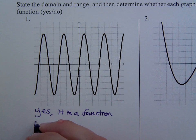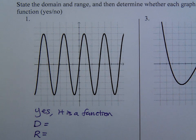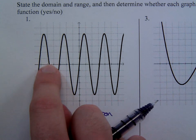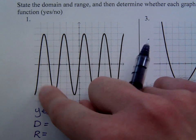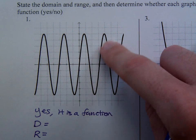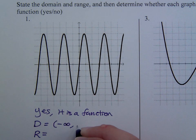Then we want to talk about the domain and the range. Remember the domain is the set of x values used to make this picture. As you go from left to right, this graph is including everything. Even though it's going up and down, from left to right it's including everything. So this would be all real numbers — negative infinity to infinity.